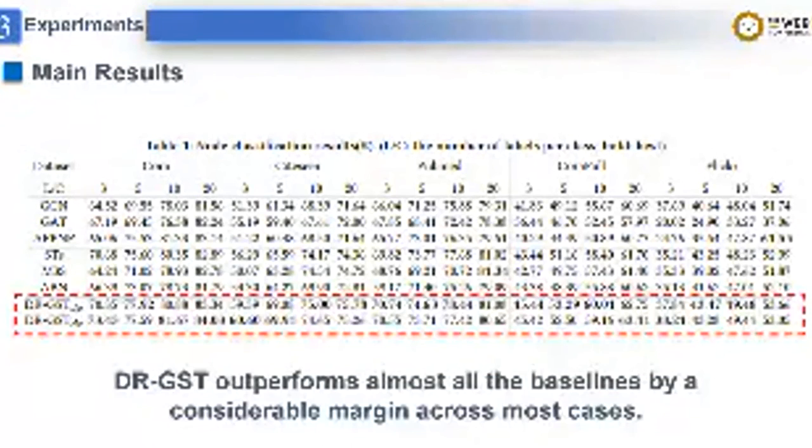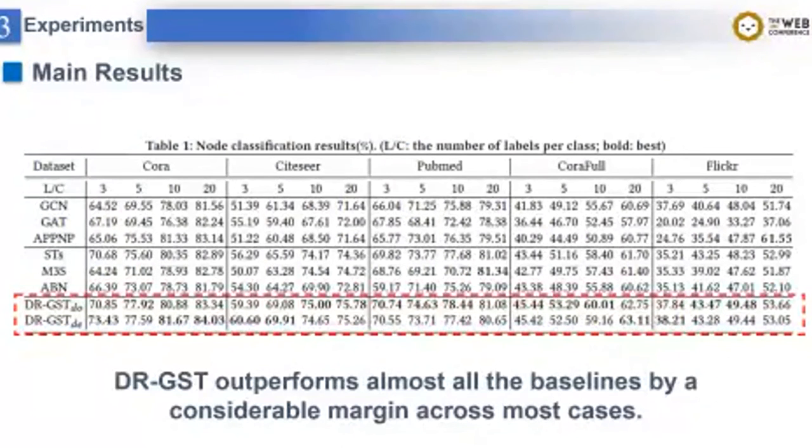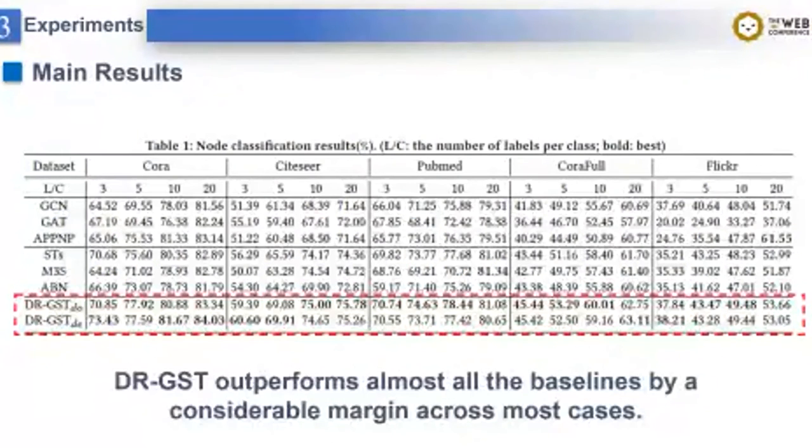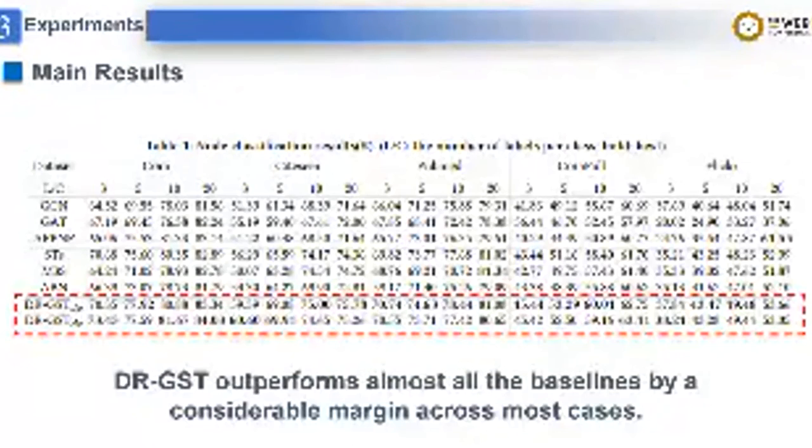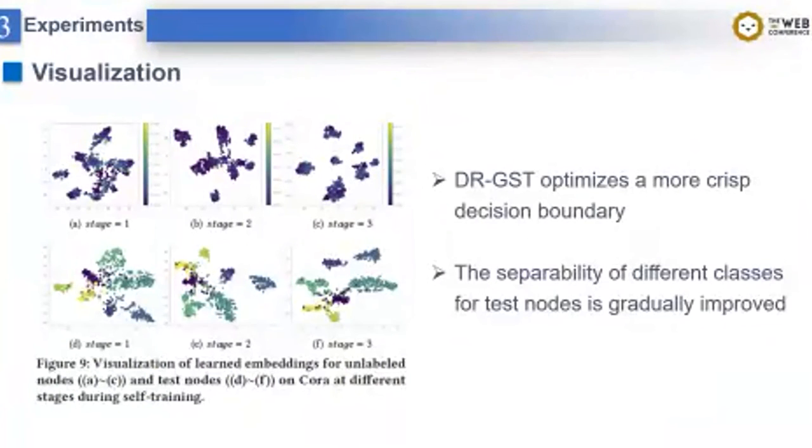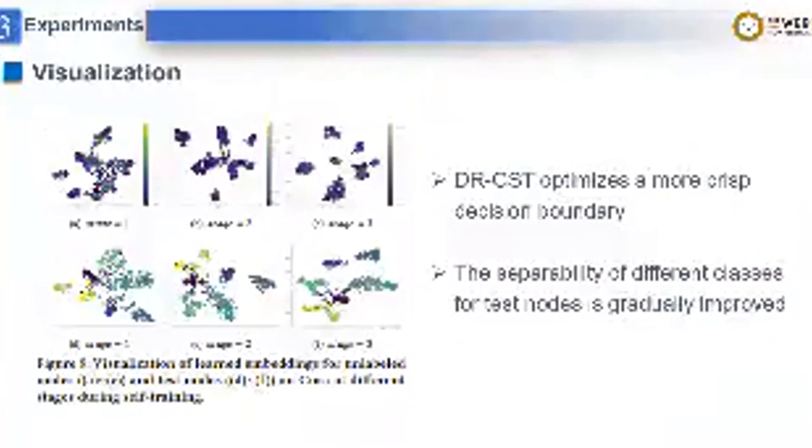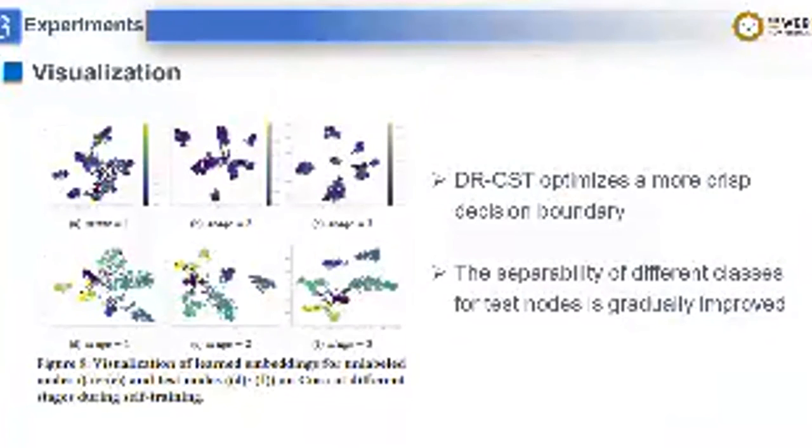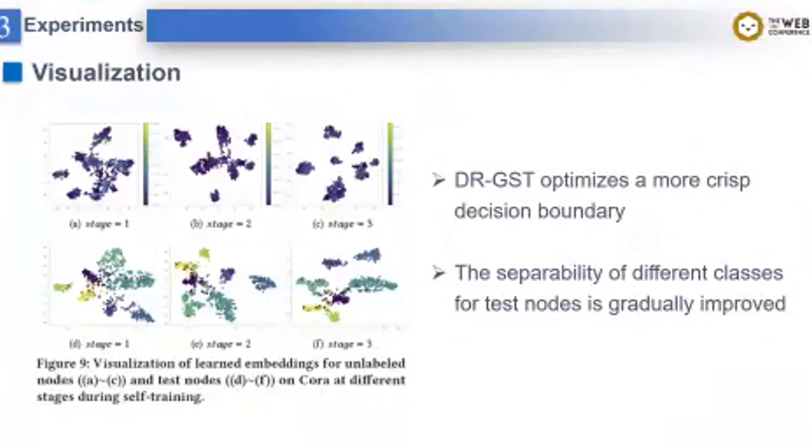DR-GST-DO and GE respectively represent DR-GST with dropout and dropedge variational inference. We can find DR-GST outperforms almost all the baselines by a considerable margin across most cases. Besides, we also visualize the learned embeddings for unlabeled nodes and test nodes. For the unlabeled nodes, we could find from the first three pictures that a more crisp decision boundary gradually appears during self-training. For test nodes, from the last three pictures, we could find the separability of different classes for test nodes is gradually improved.